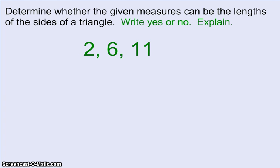Let's try one more in this video. Again, the instructions say determine whether the given measures can be the lengths of the sides of a triangle. Write yes or no and explain. So again, we pick the smaller two sides. In this case, it's the 2 and the 6. So 2 plus 6 equals 8.